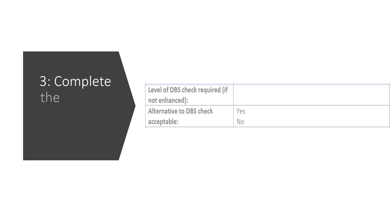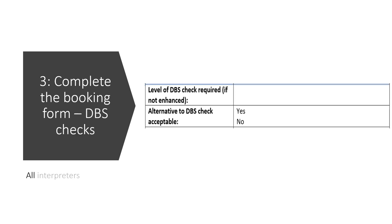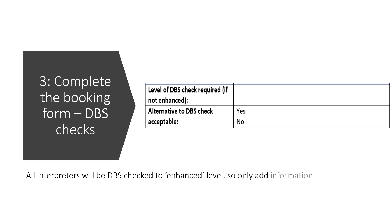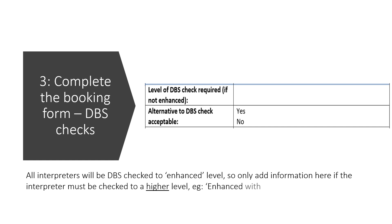Step three, continued — complete the booking form, DBS checks. All interpreters will be DBS checked to enhanced level, so only add information here if the interpreter must be checked to a higher level, e.g. enhanced with barred lists. You must explain why this is needed.